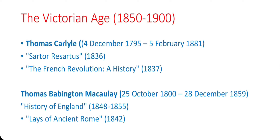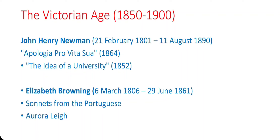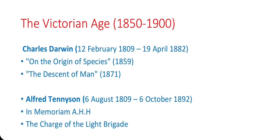Important writers and poets from this age: Thomas Carlyle — Sartor Resartus (1836), The French Revolution: A History (1837). Thomas Babington Macaulay — History of England (1848–1855), Lays of Ancient Rome (1842). John Henry Newman — Apologia Pro Vita Sua (1864), The Idea of a University (1852). Elizabeth Barrett Browning — Sonnets from the Portuguese and Aurora Leigh. Charles Darwin — On the Origin of Species (1859), The Descent of Man (1871).